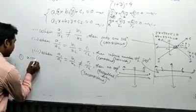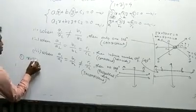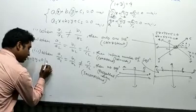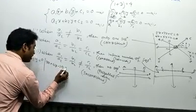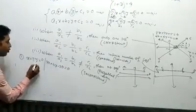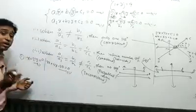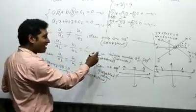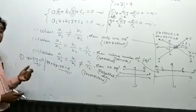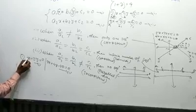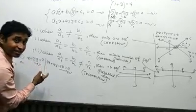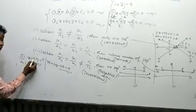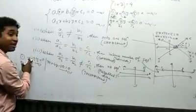Now let's do an example. Suppose equation one is x − 2y = 0 and equation two is 3x + 4y − 20 = 0. We need to check: does this system have one solution, infinite solutions, or no solution? First, identify the coefficients: for equation one, a₁ = 1, b₁ = −2, c₁ = 0.